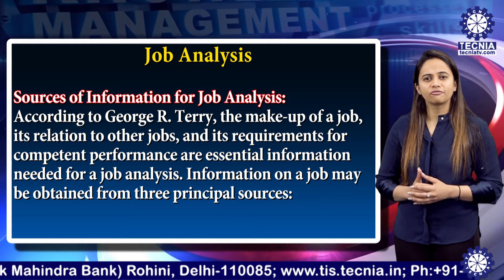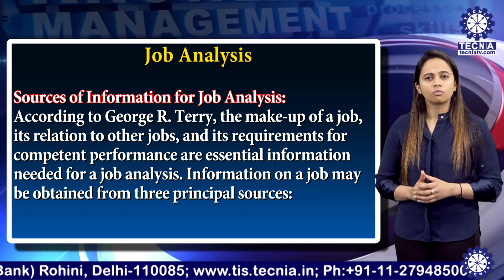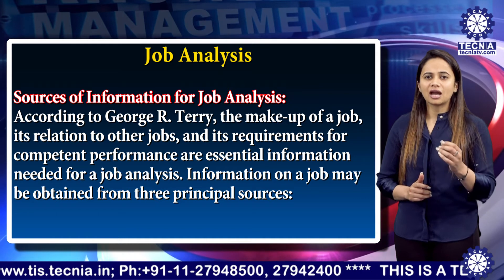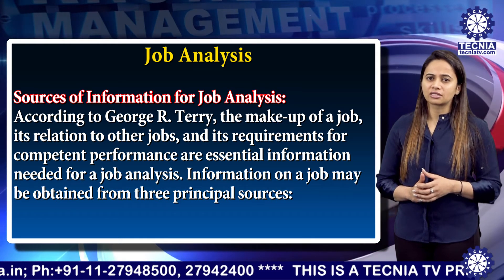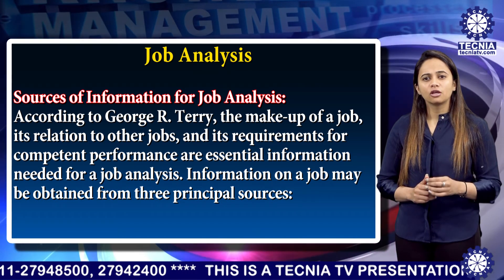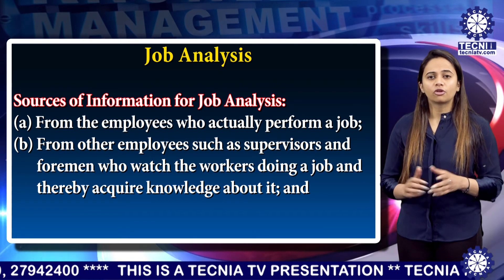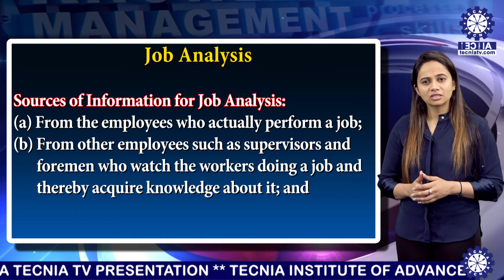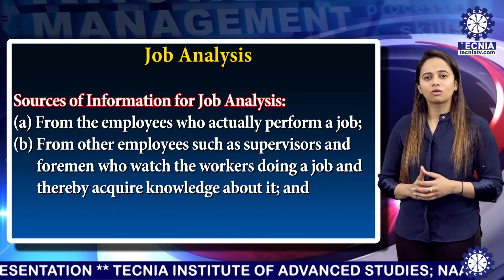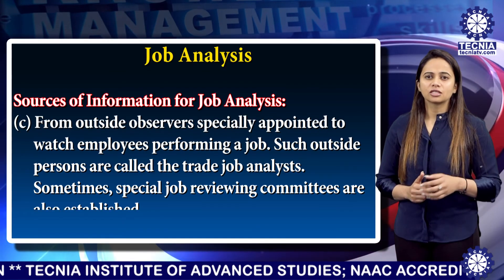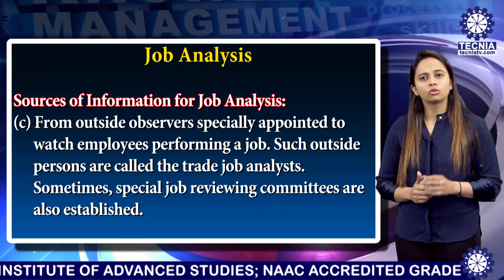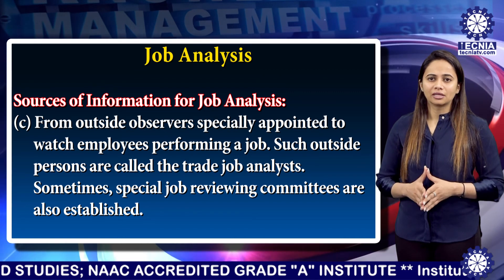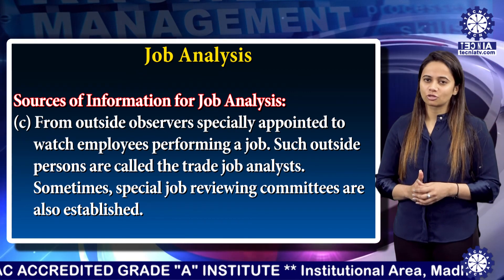Now, what are the main sources of information for job analysis? The make-up of a job, its relation to other jobs, and the requirements for competent performance are essential information needed for job analysis. Information about a job may be obtained from three principal sources. Number one, from the employee who actually performed the job. Number two, from other employees such as supervisors and foremen who watch the workers during a job and thereby acquire knowledge about it. And last, from outside observers specially appointed to watch employees performing a job — such outside persons are called trade job analysts. Sometimes special job reviewing committees are also established.